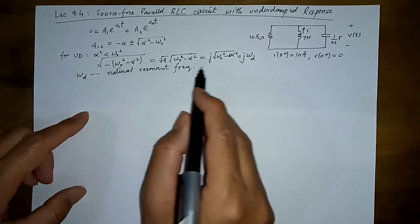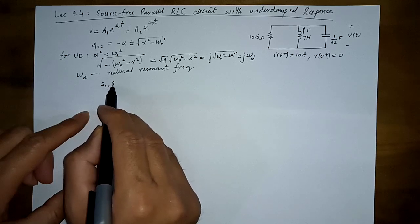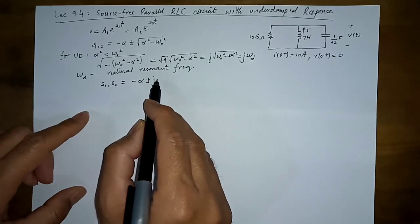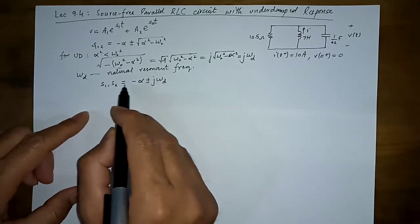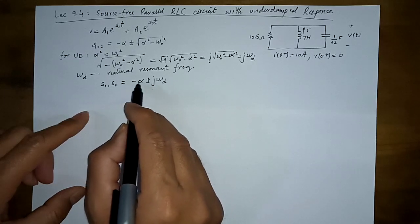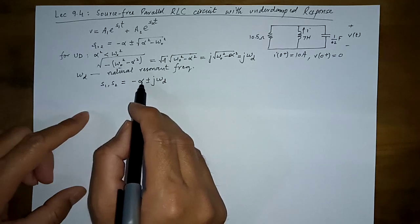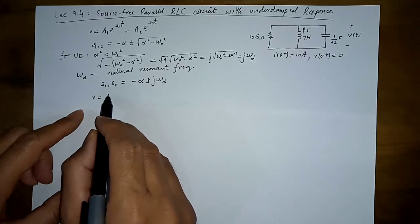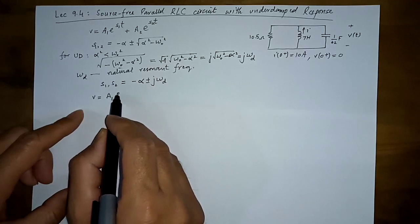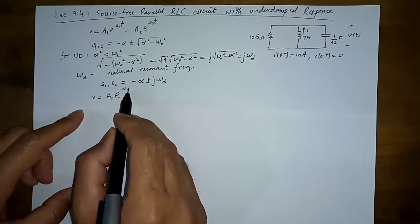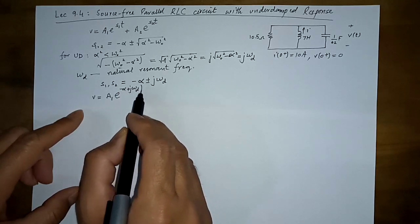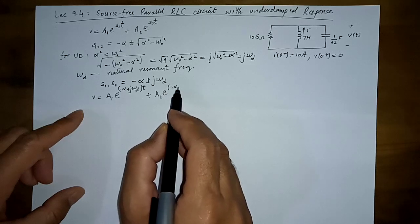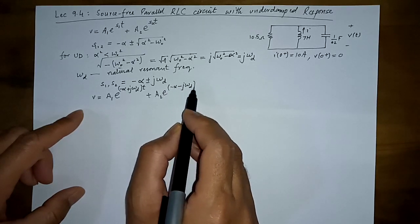So now s1 and s2 are given by minus alpha plus or minus j·omega-d — they are complex conjugates. One is (−α + j·ωd) and the other is (−α − j·ωd). The response will therefore be written as: v(t) = A1·e^((−α + j·ωd)t) + A2·e^((−α − j·ωd)t).